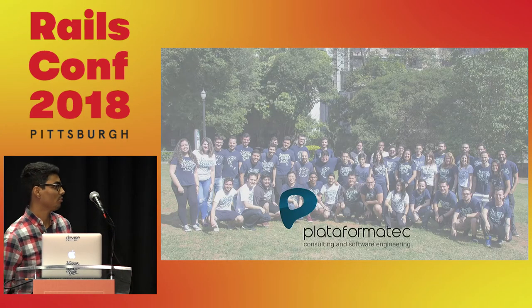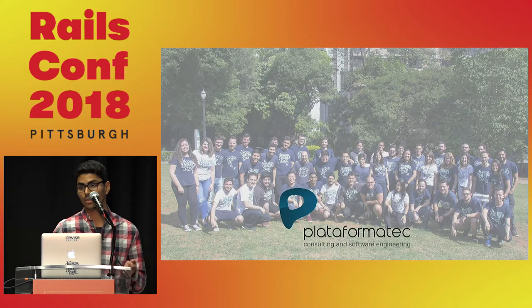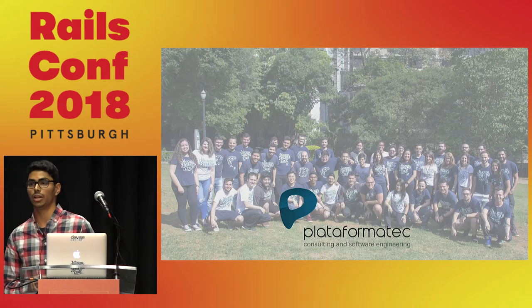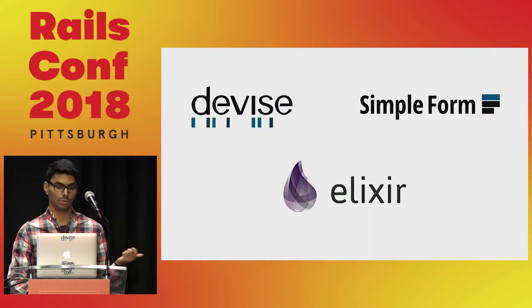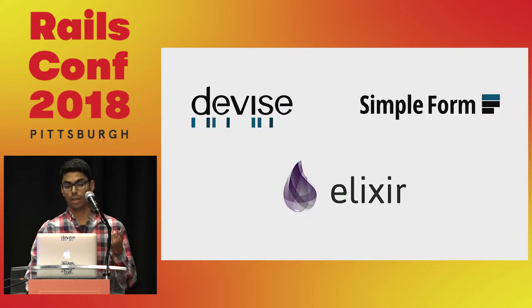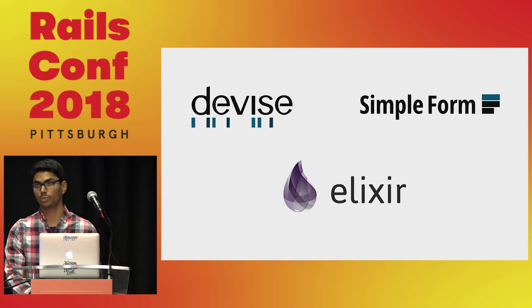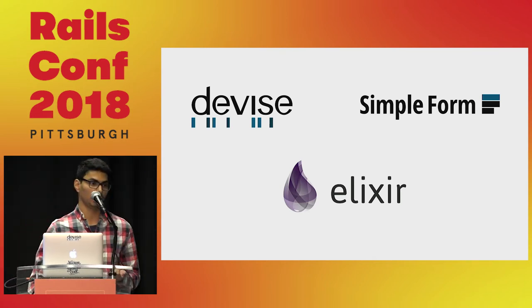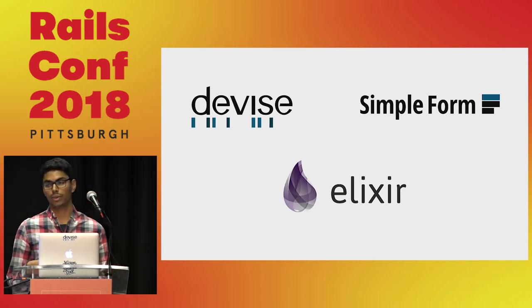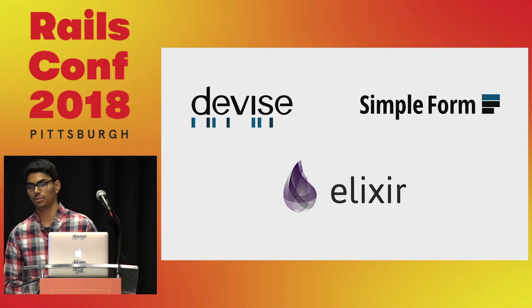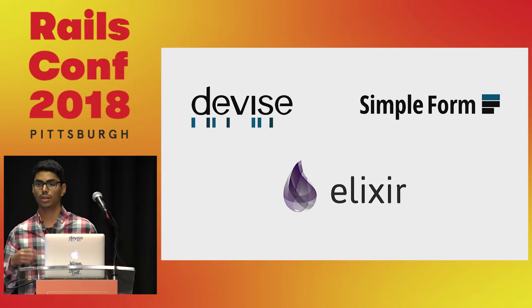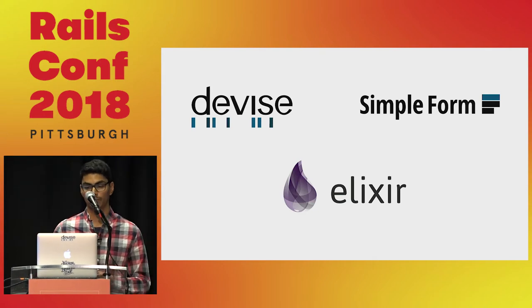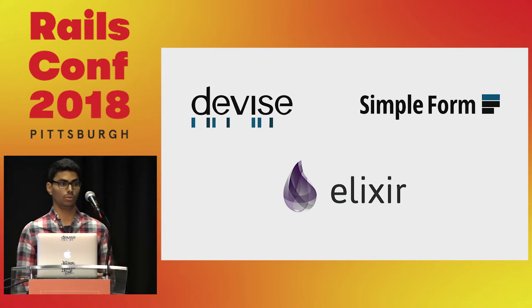I work at Plataformatec. We are a software development and agile consultancy, but you may have heard of us from our open source work. We are the ones behind the Elixir language, and we also created some Ruby gems like Simple Form and Devise. Devise is an authentication gem, and since authentication is a very common feature, it is good to have gems that handle it for us so we don't have to code it from scratch.